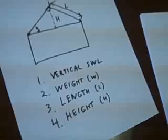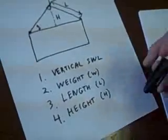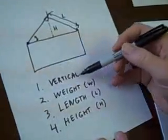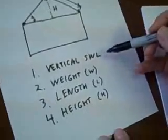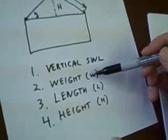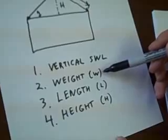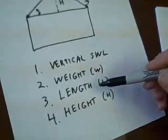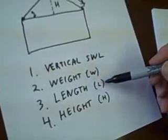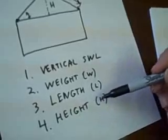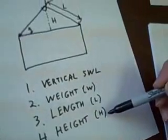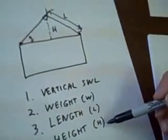So to review, the four things we needed to know was the vertical safe working load from the strap itself, the weight we're going to call that W, the length of the strap which we're going to call L, and then the height which is the distance above the load that the hook is.